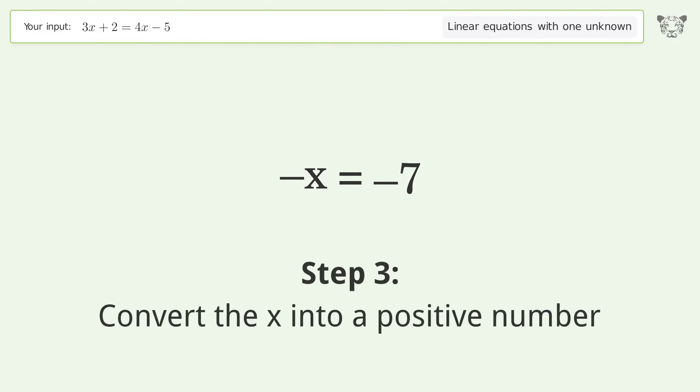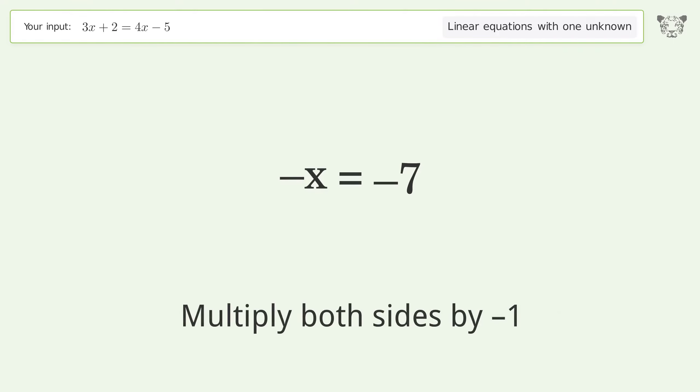Convert the x into a positive number. Multiply both sides by negative 1. Remove the 1s. Simplify the arithmetic.